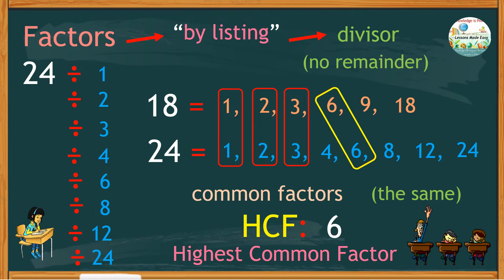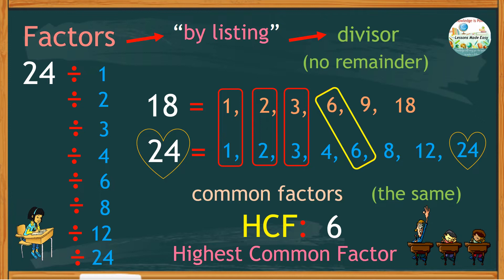The largest number is 6, therefore the highest common factor of 24 and 18 is 6. There are a few things to remember when finding factors: every number except 1 has a factor of 1 and itself. A factor must not exceed the given target number — if you're looking for the factors of 24, the maximum factor is only 24, and for 18, the maximum factor is only 18.